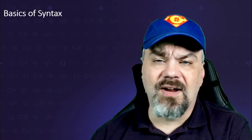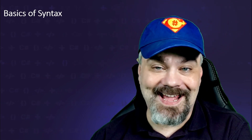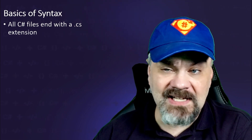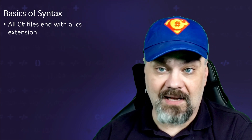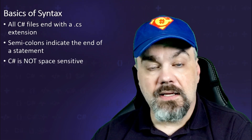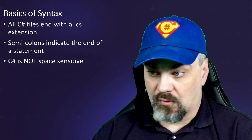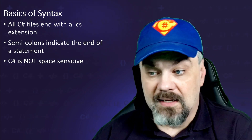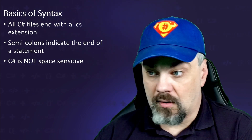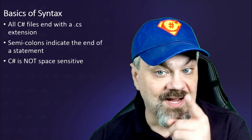Let's get into the basics of syntax. C Sharp files are plain text files that end with a .cs file extension. All of your statements are going to end with a semicolon. C Sharp is not space sensitive — you can use tabs or spaces and insert as many blank lines or spaces between characters as you'd like, as long as you keep whole words together. Make your code as readable to your human eyes as you need it to be.